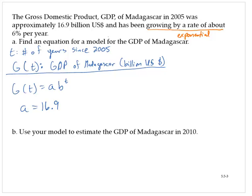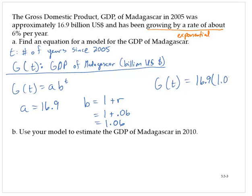Since I have a growth rate of 6% per year, the b value will be 1 plus the rate. So that will be 1 plus 0.06 — remember, we must write that as a decimal — and so that would be 1.06. Putting that information together, g of t is equal to 16.9 times 1.06 to the t.